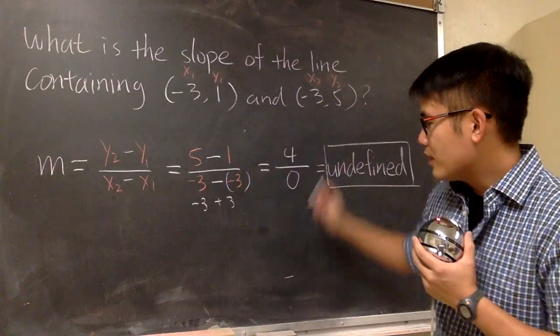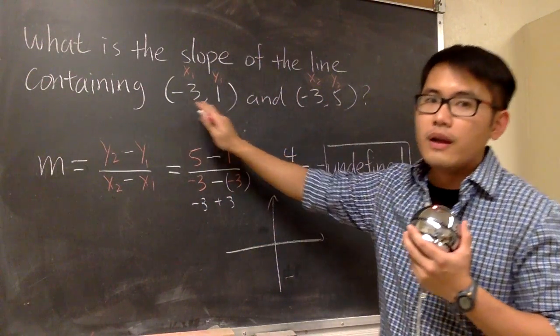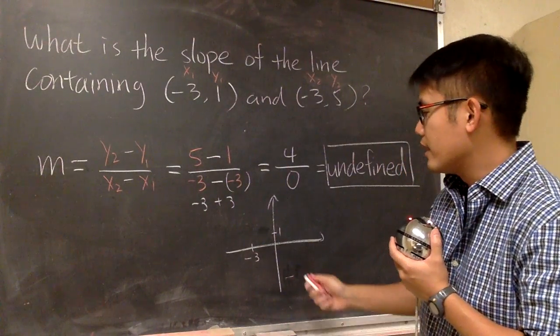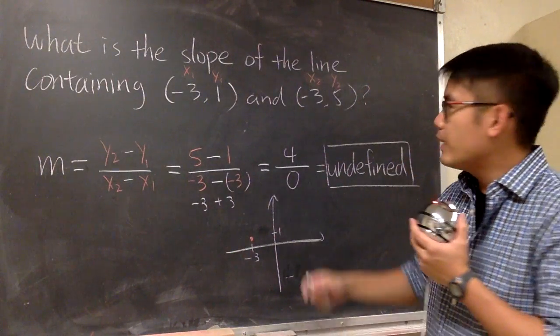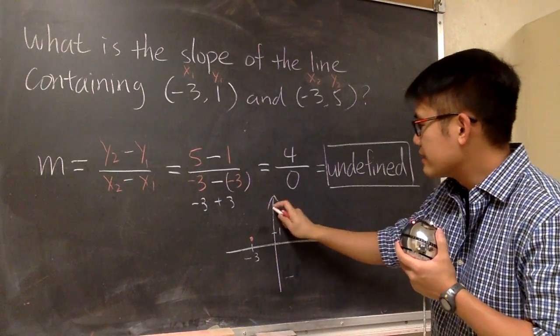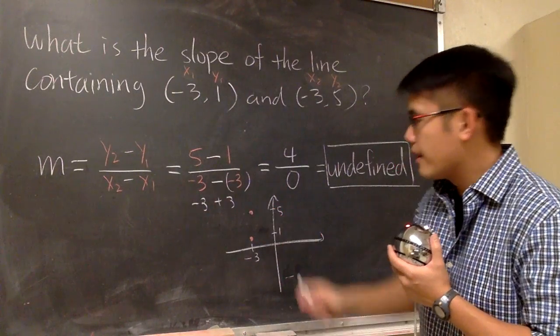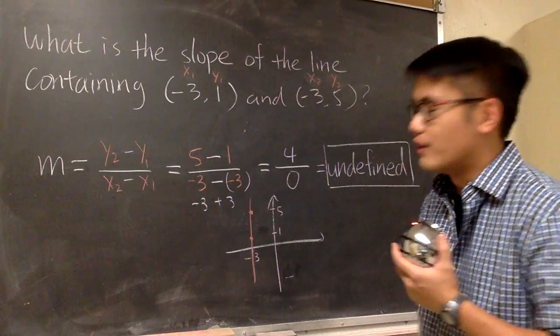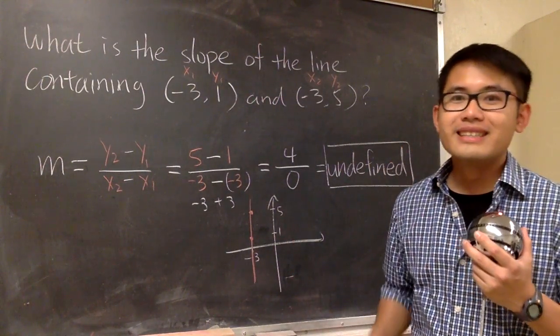Here, right here, we have actually a vertical line. Because when you have this point, (-3, 1), let me just write it down right here. This is -3, this is 1. This is the first point, which is this point. And we also have (-3, 5). Let's say this is 5 here. (-3, 5). And you see, when we connect the dots, we end up with a vertical line. Vertical line has undefined slope. This is it.